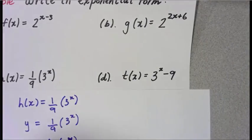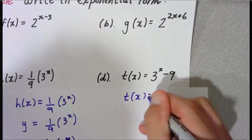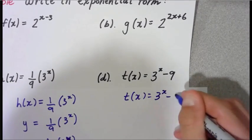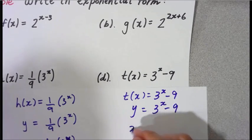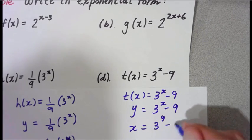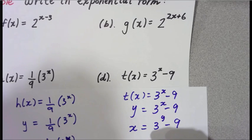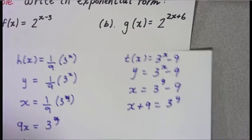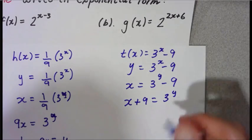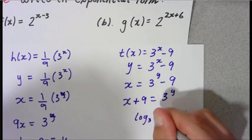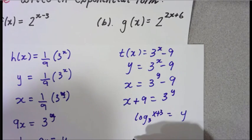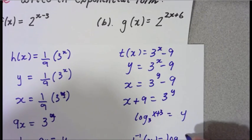Last one: t of x equals 3 to the x minus 9. Write this as y equals 3 to the x minus 9. Interchange x and y, then resolve for y. Add 9 to both sides: x plus 9 equals 3 to the y. Now take the logarithm — log base 3 of x plus 9 equals y. So t inverse of x equals log base 3 of (x plus 9).